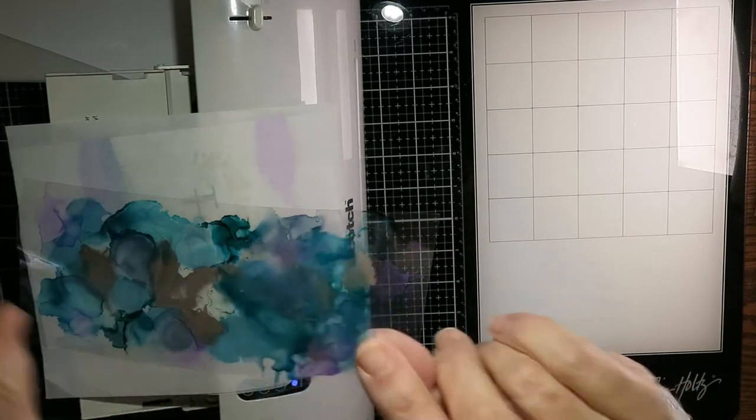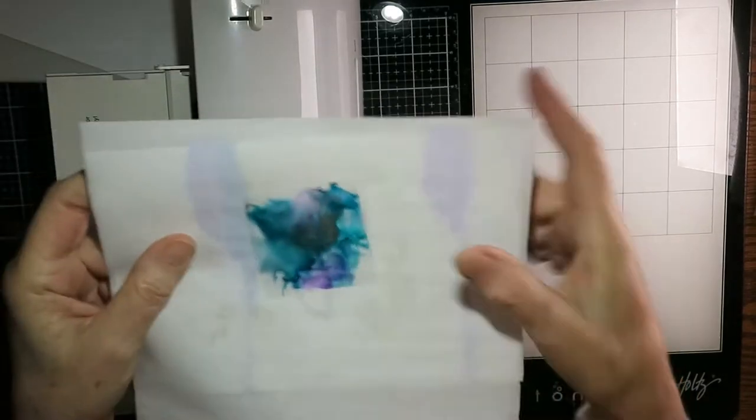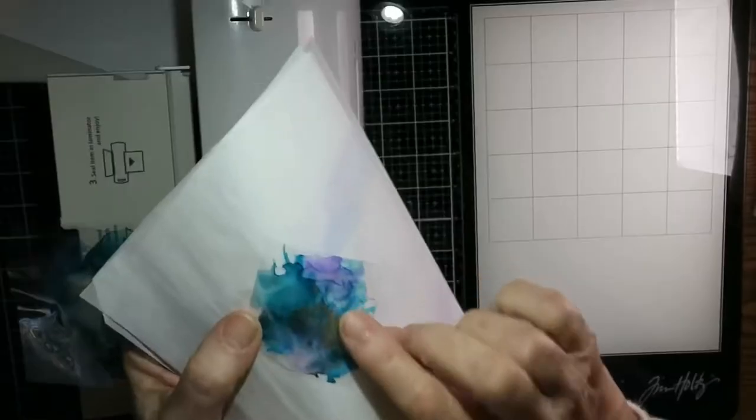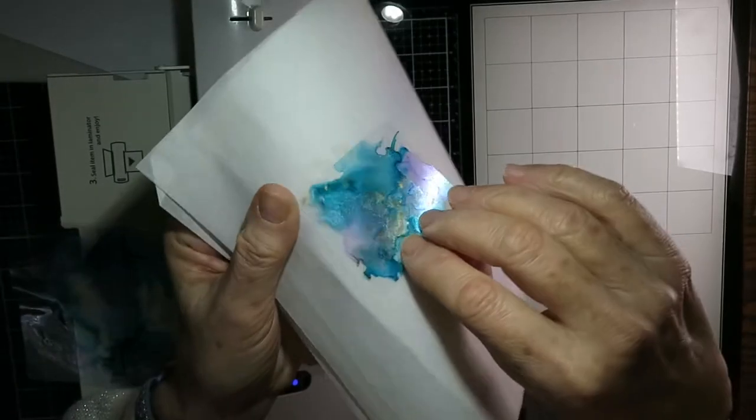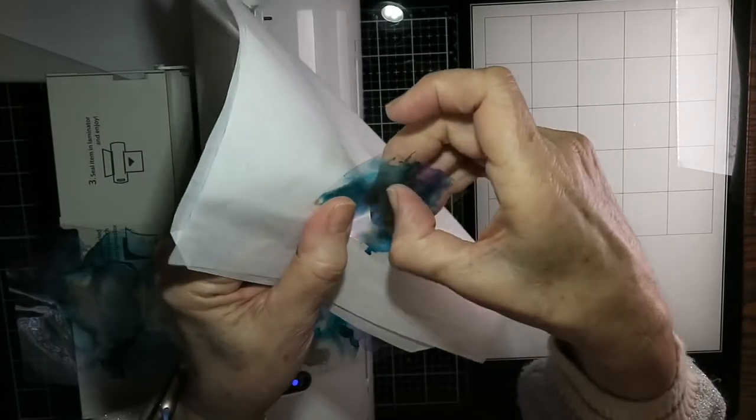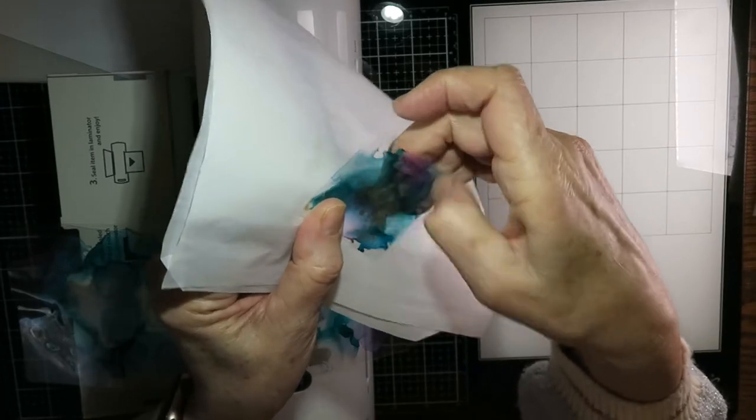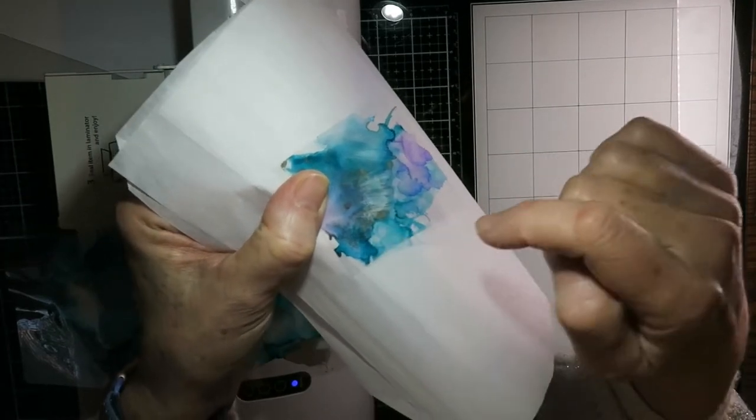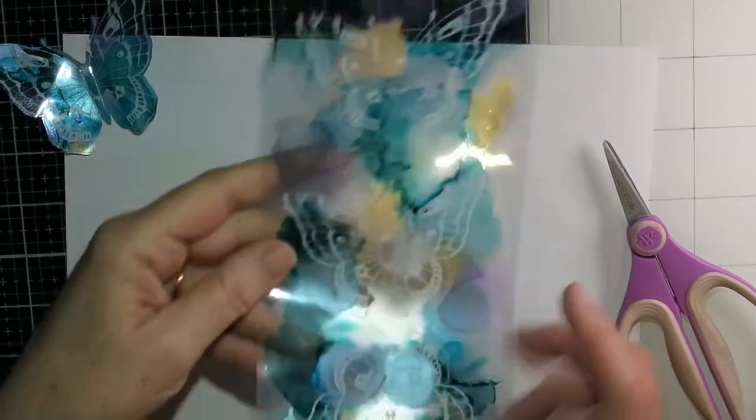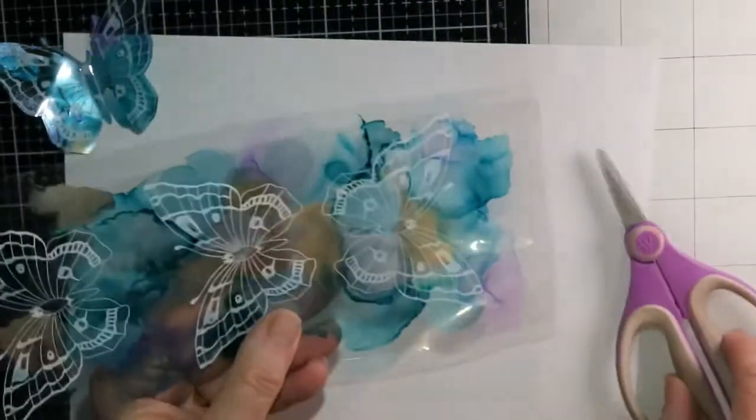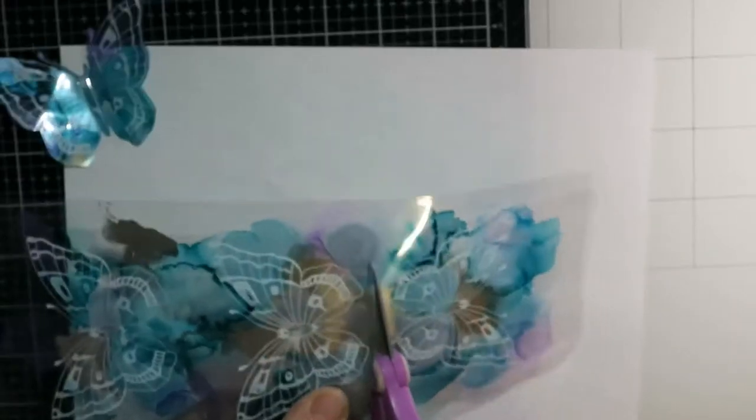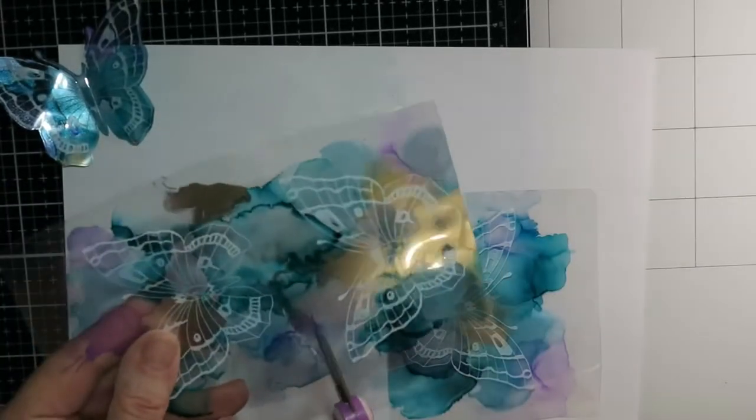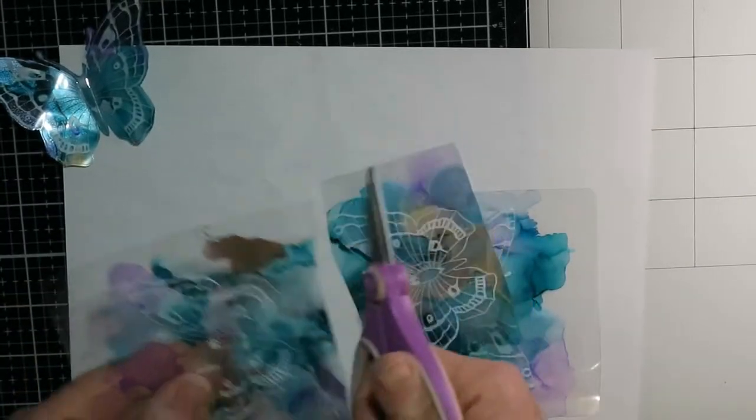Now, this is a piece of acetate that I put some alcohol ink on. And I have made these butterflies before with acetate. But the problem is on the side where the alcohol ink is, it can scratch off. So just in case when you're putting it together, if you scratched it, you would lose some of that ink or if it got scratched up in the mail. I just find the laminating pouch is a little bit better for that because nothing comes out.